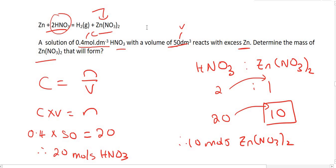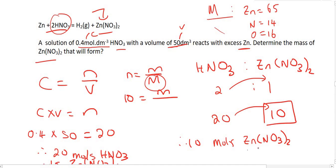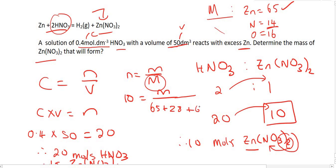We then convert 10 moles of zinc nitrate into mass using n = M/Mm. The molar mass of zinc nitrate: zinc is 65, plus 2 nitrogens (14 × 2 = 28), plus 6 oxygens (6 × 16 = 96). Working everything out gives a mass of zinc nitrate of 1,890 grams.